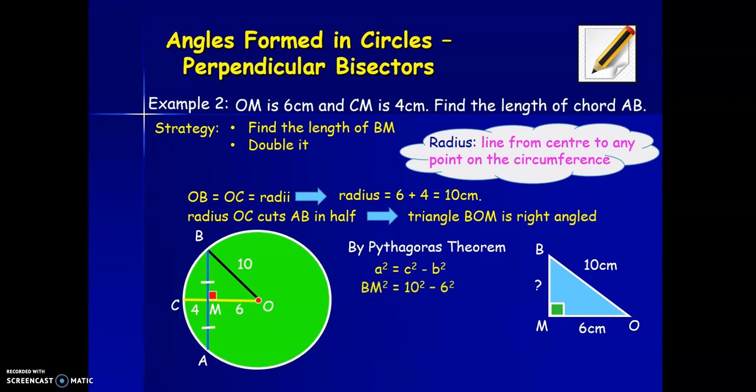So putting in our values, BM squared equals ten squared take away six squared. That gives us 64. Remembering to square root, BM is the square root of 64, so it's eight centimeters. But we were asked to find the length of the chord AB. So that's double the length of BM. So it's two times eight, which is 16 centimeters.